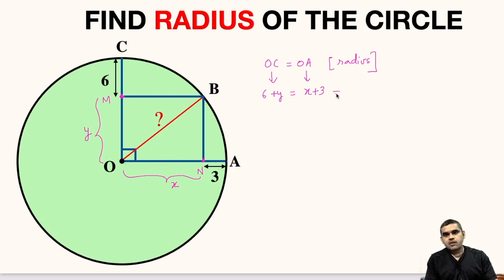From here, we can get a relationship between X and Y. For that, let us subtract 6 from both sides. So we will get Y equals X minus 3. So this is the relationship between X and Y, which we will be using to find the radius of the circle.